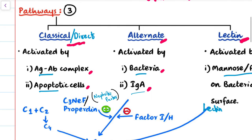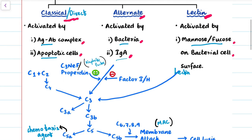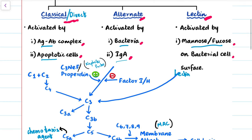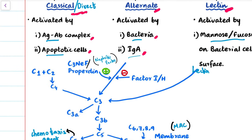These are all actually a cascade reaction. In the direct pathway, what happens is that C1 and C2 together join and they activate C4. C4 goes and activates complement 3.